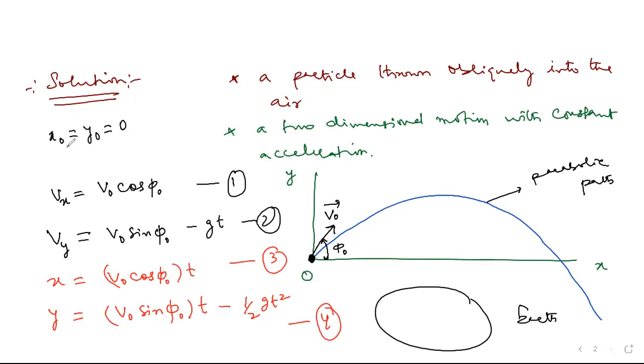Remember, we are assuming x0 and y0 are both 0, meaning we are throwing the projectile from the origin. Otherwise, we would add x0 to the x equation and y0 to the right-hand side of the y equation. Now let us move to the solution. Part A asks us to solve for the time t1 at which the ball reaches the highest point of its trajectory.